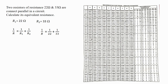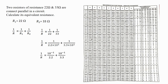Before using the reciprocal table I have to convert the given numbers into standard form. So I write: 1 divided by 2.2 into 10 raised to 1, plus 1 divided by 3.3 into 10 raised to 1. Next I transfer 10 raised to 1 into the numerator, so it becomes 10 raised to minus 1. Now let's find the reciprocal value of 2.2. Since there is no further digit after 2.2, I observe the reciprocal value under the 0th column, which is 0.4545. Similarly, the value of 3.3 under the 0th column is 0.3030.